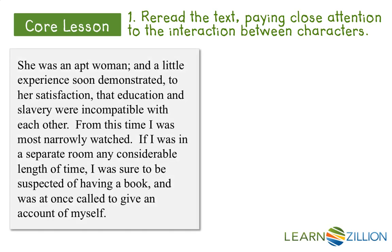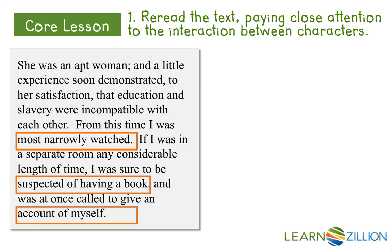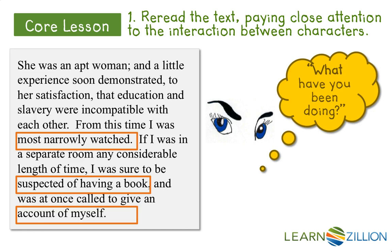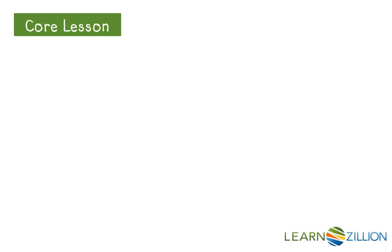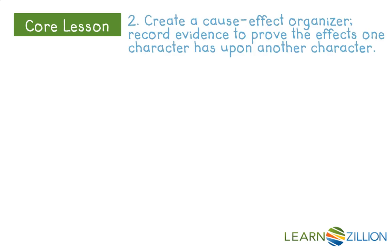In this portion there are more examples of how Mistress Hugh treated Frederick. It says that she most narrowly watched him. If he was in a room by himself she suspected him of having a book. If she lost track of him for any part of time she wondered where he had been and asked him to give an account of what he had been doing. She was constantly watching and suspicious, always wanting to know what he had been doing.